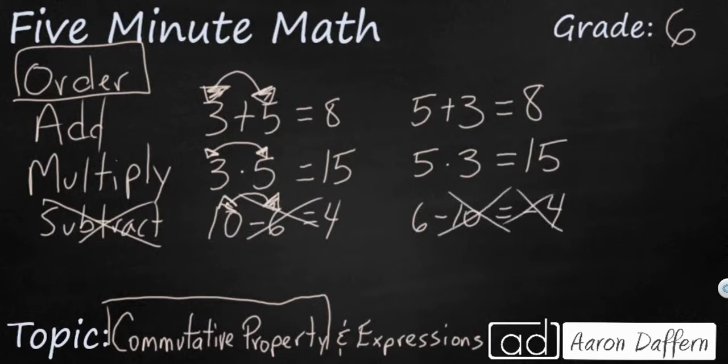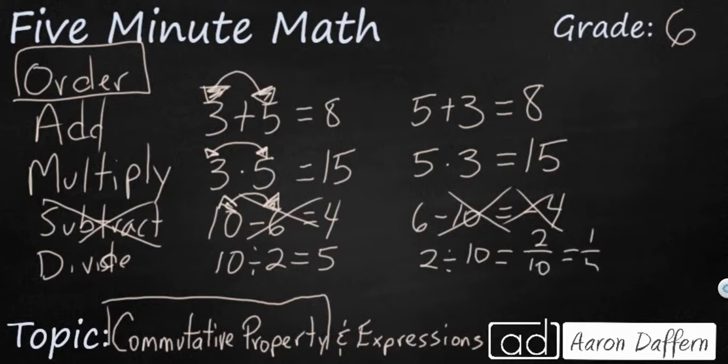Nor can you use it with division. So let's see what we have here with something simple like 10 divided by 2. 10 divided by 2 is going to be 5. But if you get 2 divided by 10, because you change the order right there, then you're going to get 2 tenths, which is going to be 1 fifth or 0.2. Something completely different. So the commutative property only works with addition and multiplication.